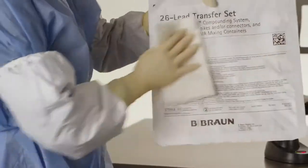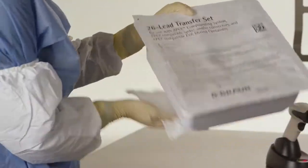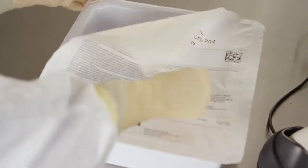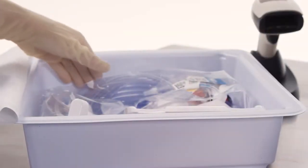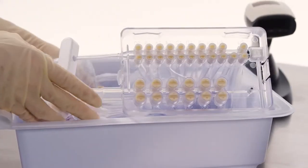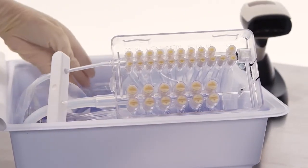Using aseptic technique, introduce the transfer set package into the laminar hood and open its outer tray. The transfer set lies within the tray contained in a partial plastic sleeve. While keeping the transfer set contained within the partial plastic sleeve, position the manifold on the edge of the transfer set tray.